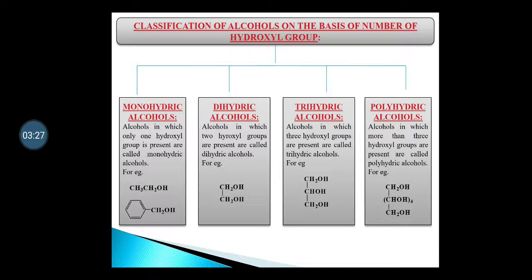Examples of monohydric alcohols include ethyl alcohol and benzyl alcohol. Ethyl alcohol is aliphatic monohydric and benzyl alcohol is aromatic monohydric — but both have only one hydroxyl group present. Dihydric alcohols have two hydroxyl groups present. For example, ethylene glycol has two OH groups.